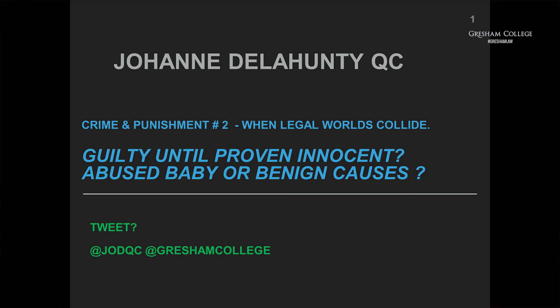This is really going to be a teaser. The written handout contains all the references you will need — it's got data, case names like Re A and B and X Y and Z — and none of that will make sense unless you go through this lecture. So if I do my job right, what you will wish to do when you leave this room is to pick up the leaflet outside and learn a little more about the science we deploy in family justice cases. Tonight's lecture: 'Guilty Until Proven Innocent — Abused Baby or Benign Causes.'